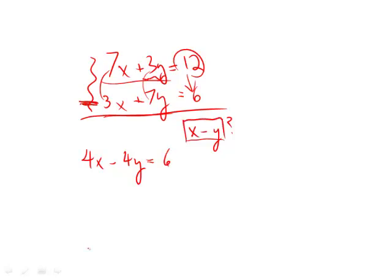Are we there yet? Well, almost. Look at it here. We have 4x minus 4y. Bring out the 4. We get x minus y equals 6. Divide both sides by 4. And just like that, x minus y equals 3 over 2.